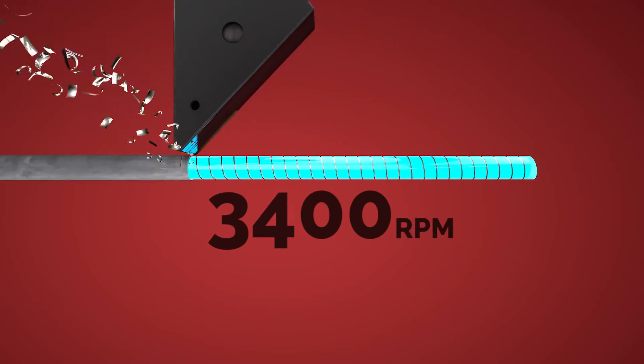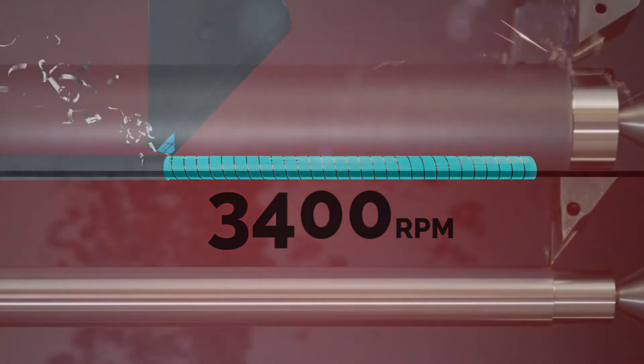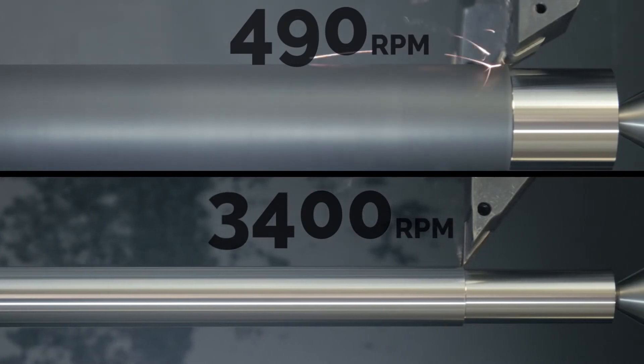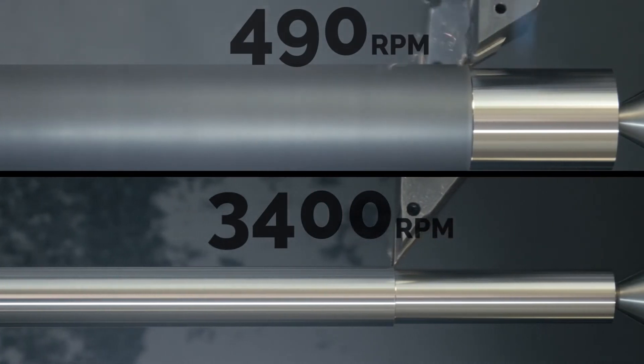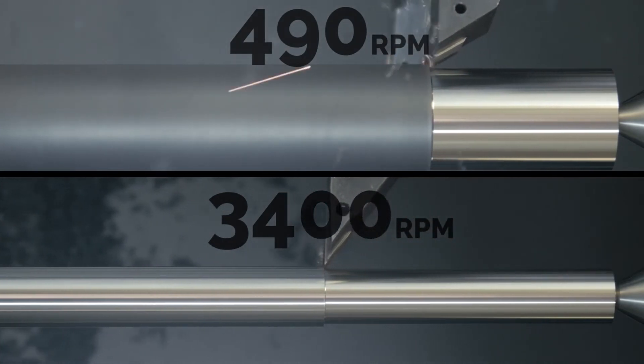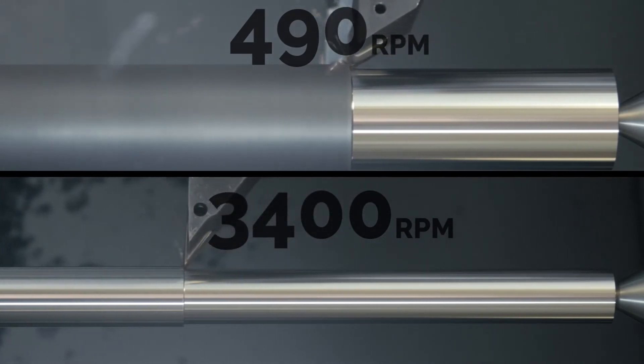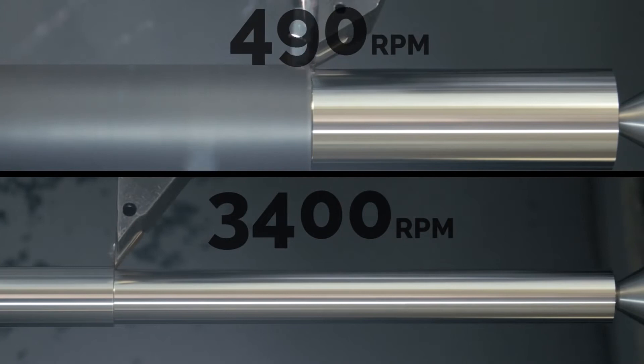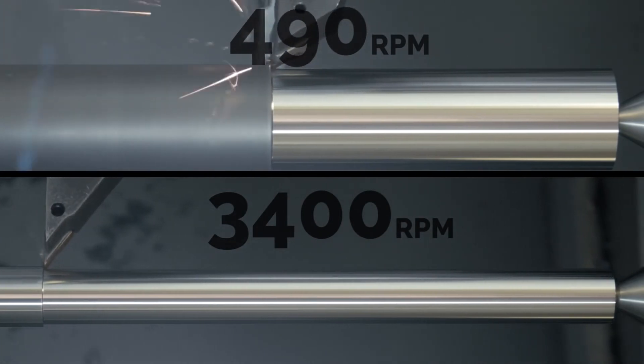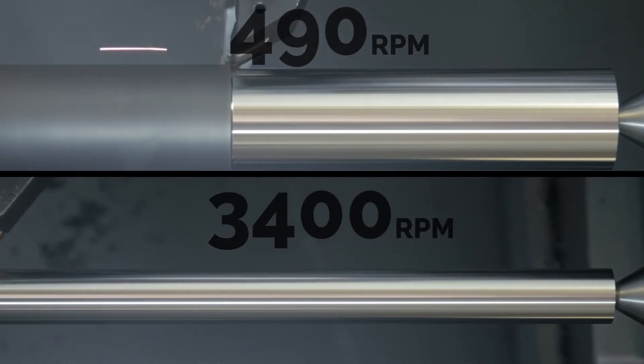Yep, 7 times faster. So when our part got 7 times smaller, our speed had to get 7 times faster. Now we know that speed must increase as diameter decreases, and vice versa, to keep surface footage the same. And that's exactly what G96 does.